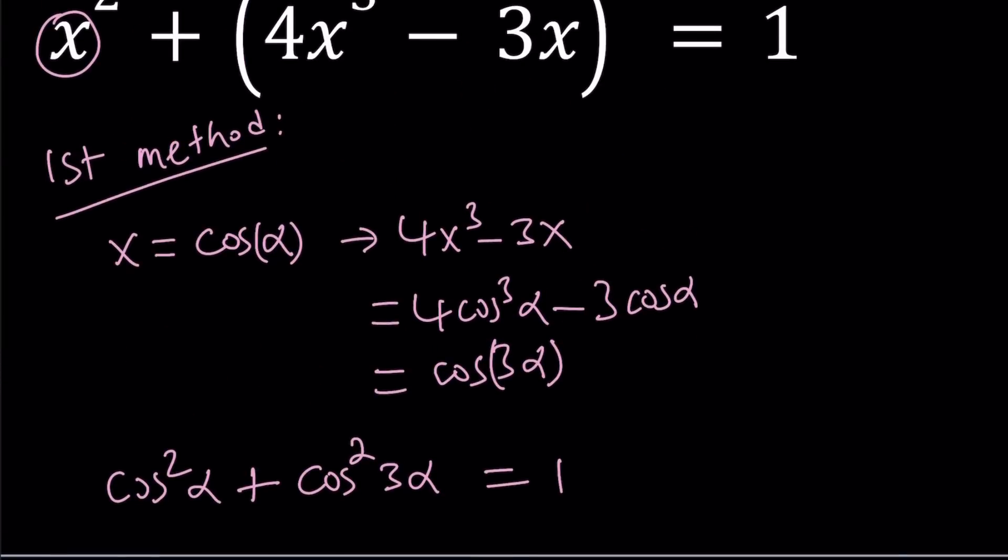Well, we know that sine squared alpha plus cosine squared alpha is equal to 1. But this is a little different. It's kind of like the sum of two cosines squared.